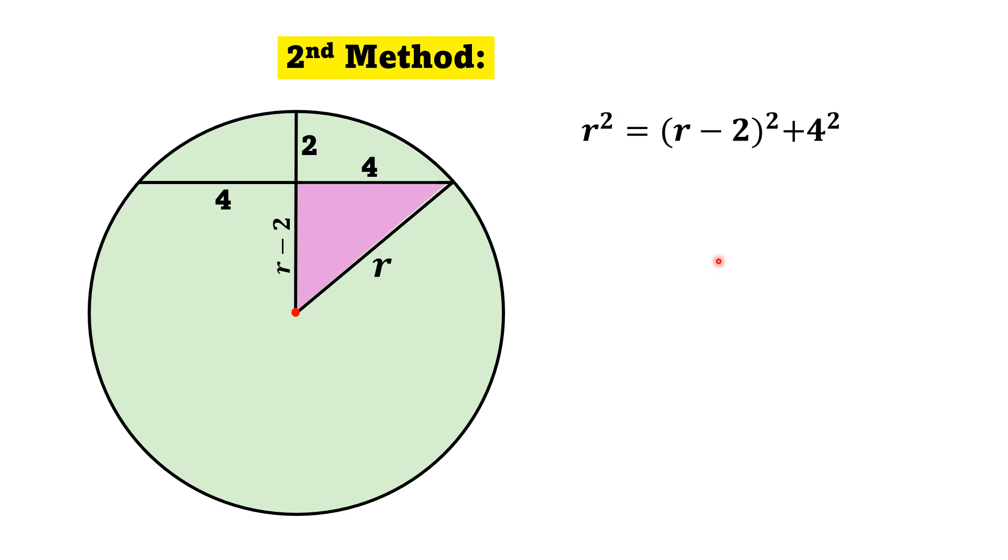Expanding the binomial on the right, we will get R square is equal to R square minus 4R plus 4 plus 16. R square will be cancelled out with R square on the left and right.